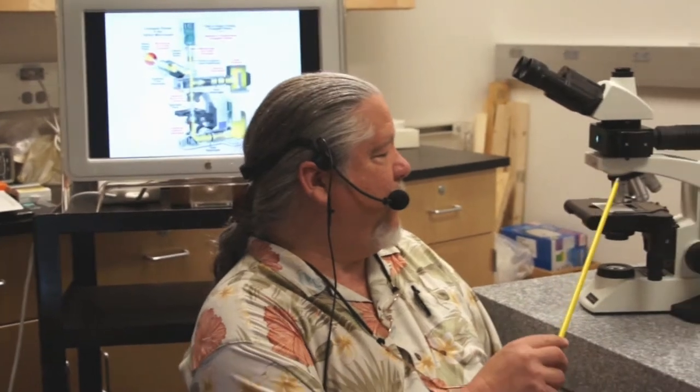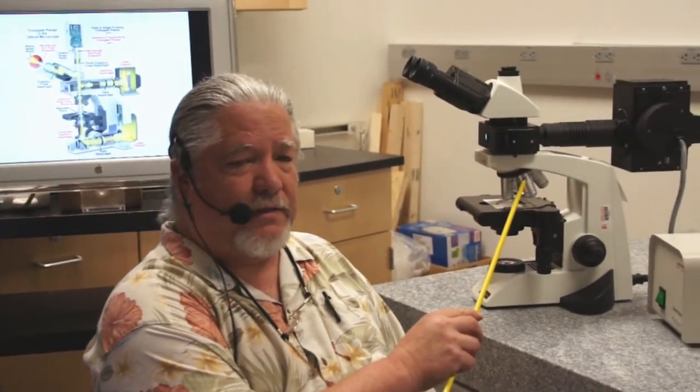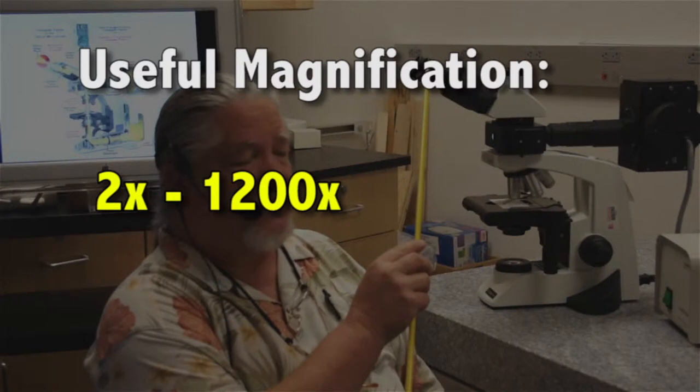This is called a compound microscope. The reason this is called a compound microscope is because to get the resultant magnification out of the instrument, you multiply the magnification of the objective lens times the magnification of the eyepiece lens. Ergo, this is a compound microscope.